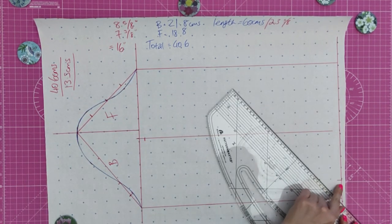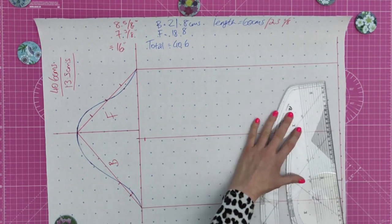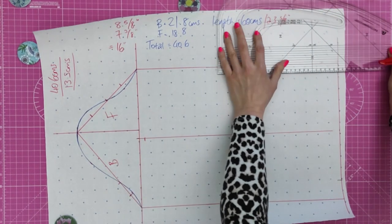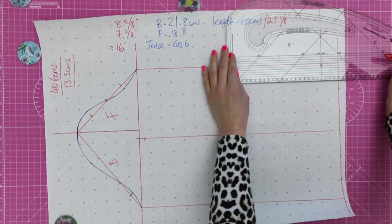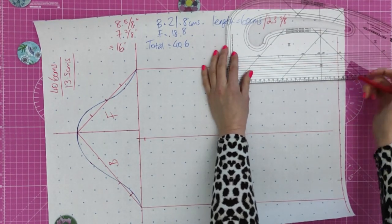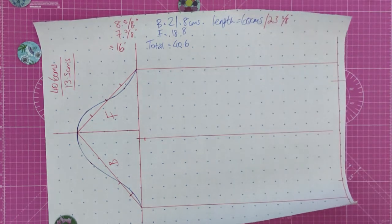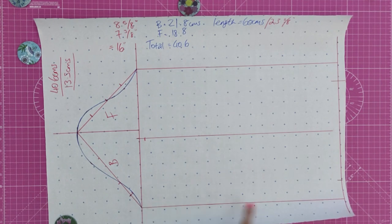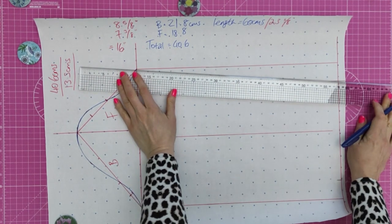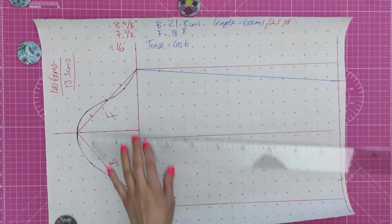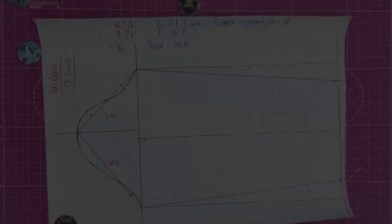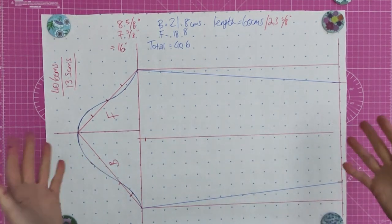And you want to do exactly the same here and exactly the same here. I've gone for 4, I've got a memory of a goldfish. 4 centimeters there. And then it's a case of connecting this to this and this to this. And that, my lovely, is your finished sleeve block.